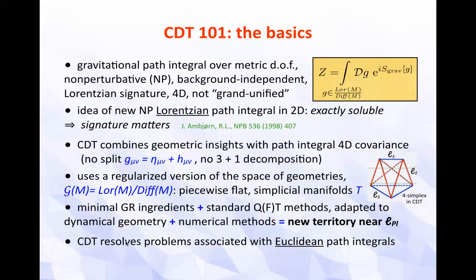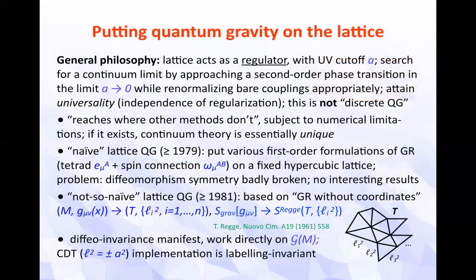CDT resolves problems associated with Euclidean path integrals. The general philosophy of putting quantum gravity on the lattice is that the lattice acts as a regulator with an ultraviolet short-distance cut-off — essentially the edge length — and one then searches for a continuum limit by approaching a second-order phase transition in the coupling constant space, in the limit as the lattice spacing a goes to zero, while renormalizing bare couplings in an appropriate manner.